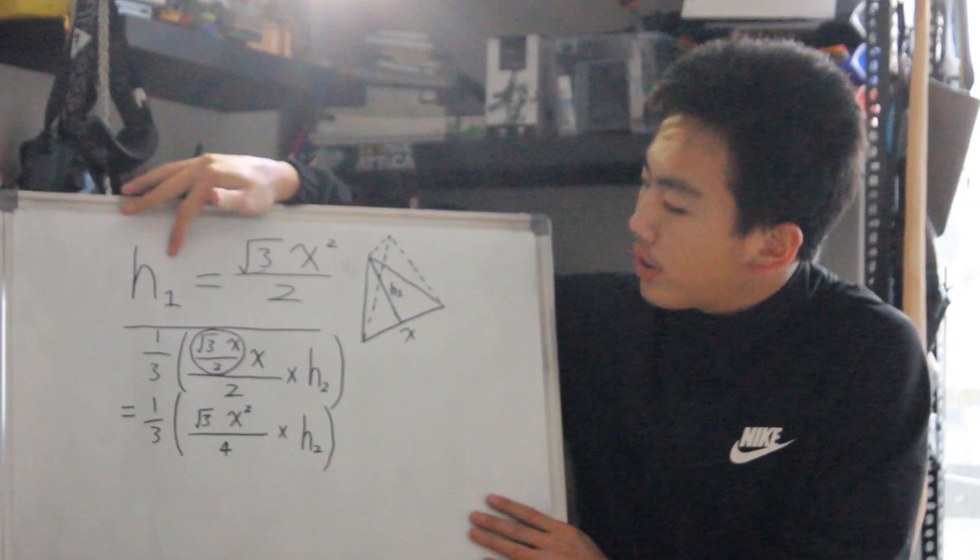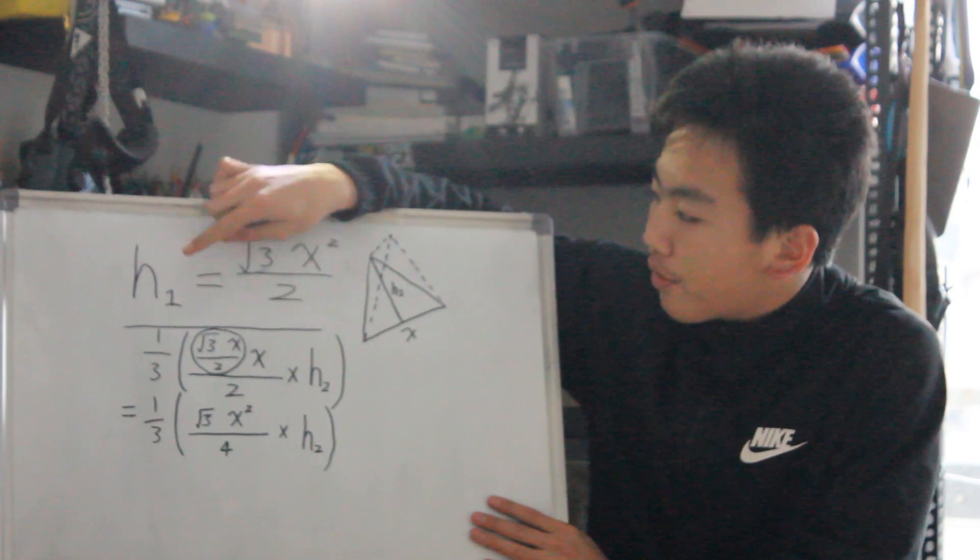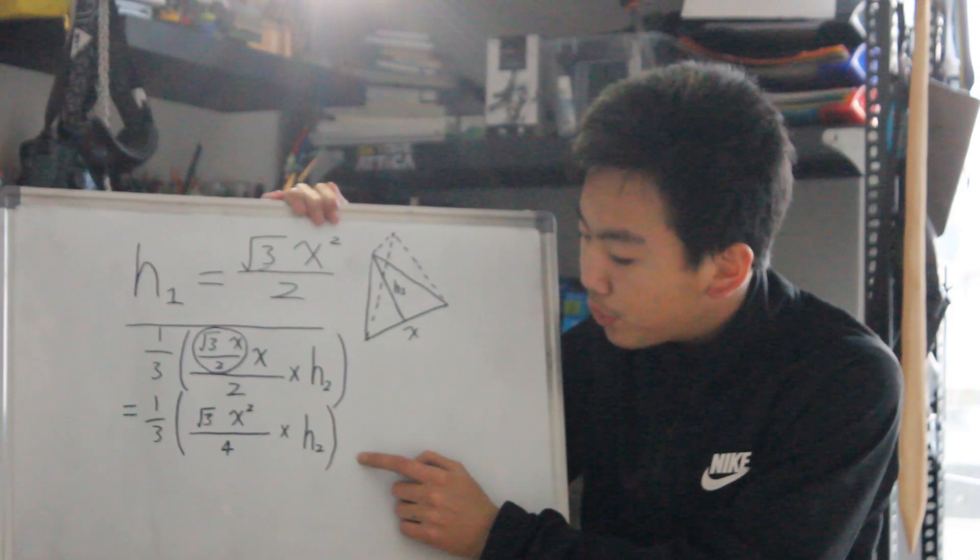Now we've substituted the first height, the height of the base triangle, and we put it back into the equation where the first height is supposed to be. Of course, we simplify it, and now we need to substitute the second height.